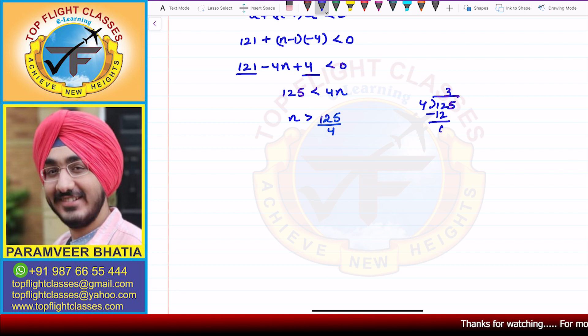125 divided by 4 will give me 4 into 3 is 12. And when I subtract, I get 0. Now 4 into 1 is 4. When I subtract, I get 1. So here, N is greater than 31 by 4.